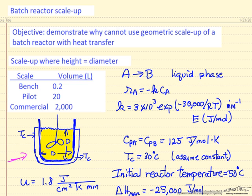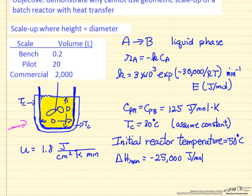Liquid phase reaction, A goes to B, first order, given a rate constant which has an exponential temperature dependence. We have heat capacities. We have a cooling temperature, the coolant circulating through the outer jacket, and we'll assume that temperature is constant to make our calculations easy. We'll start out with the reactor at 50 degrees, but it's an exothermic reaction, so we're expecting the temperature will increase, and we're given a heat transfer coefficient.